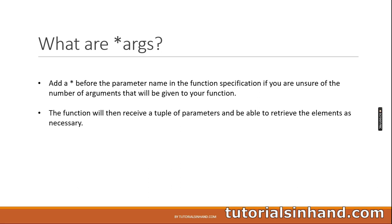The function will then receive a tuple of parameters and be able to retrieve the elements as necessary. Consider an example: in a function, you know you will receive a number of arguments but you are not sure how many will be passed. Your function is written such that depending on the number of arguments, you will return a value. If one argument is passed the function will execute, and if 100 arguments are passed, still the function will execute.